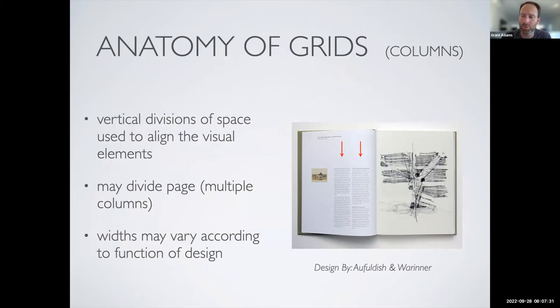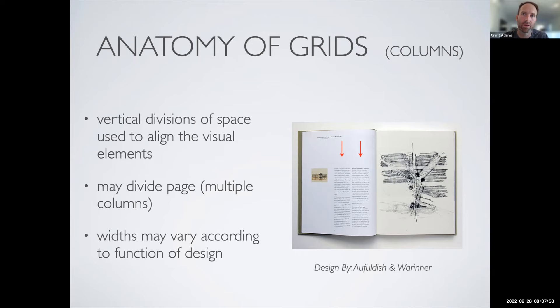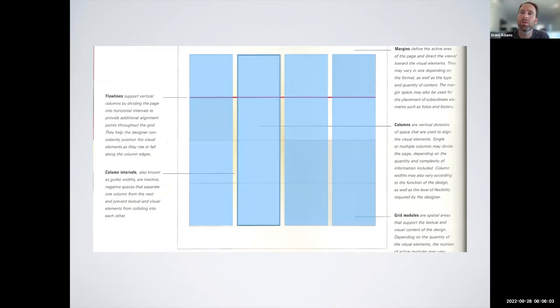Columns are also something you're probably familiar with — maybe from magazines. They're basically vertical divisions of space used to align elements. You may have multiple columns on a page or just a single column of text, like an English or history paper. The width of a column can vary depending on the function of the design, desired line length, and what feels appropriate. These highlighted blue areas are the columns — this page would have four columns.